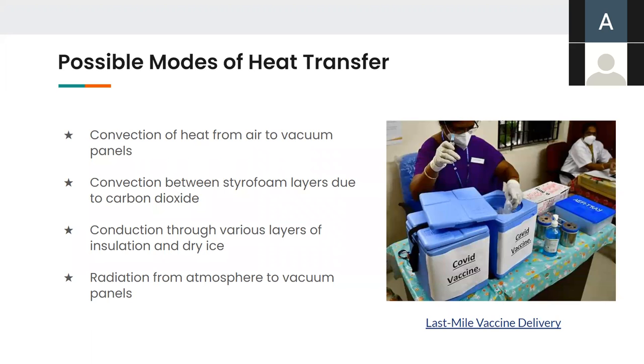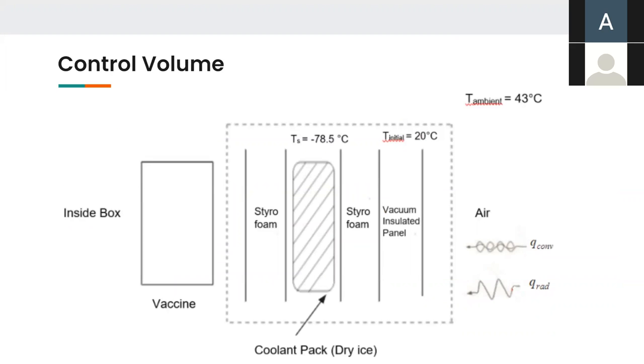Moving on to the control volume analysis of our case. The ambient temperature outside is considered to be 43 degree Celsius. This is a good temperature to test the cold storage ability and facility of our box as it matches with the temperature observed during hot days in such tropical regions. Moving on to the vacuum insulated panels. They are initially assumed to be at 20 degree Celsius, which we believe is a nearly room temperature in which empty storage boxes will be kept initially. The coolant dry ice inserted as a solid at a sublimation temperature is initially maintained at minus 78.5 degree Celsius. The inside is the core of the box.